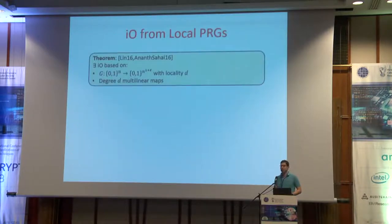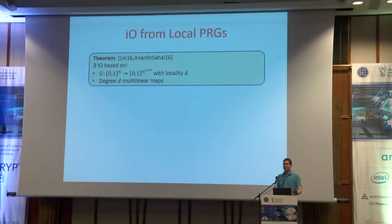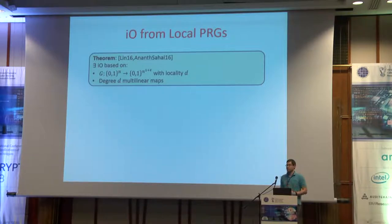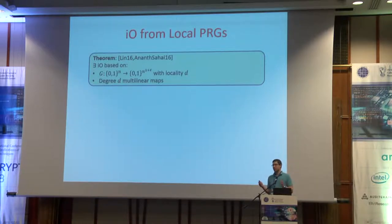I won't define IO — all you need to know is that it's our dream. If we can get it, we will solve all of our open problems. The theorem that Lin, Lin and Vipul Naik and Sahai proved roughly two years ago is that this magical primitive can be based on two assumptions: first, that there is a local PRG with locality D mapping n bits to n^{1+epsilon}; and second, what we call degree-D multilinear maps — for D equals 2, this is what we all know as bilinear maps.